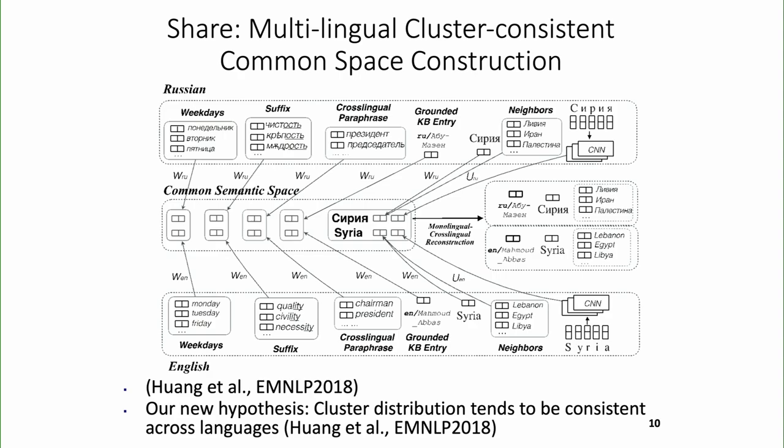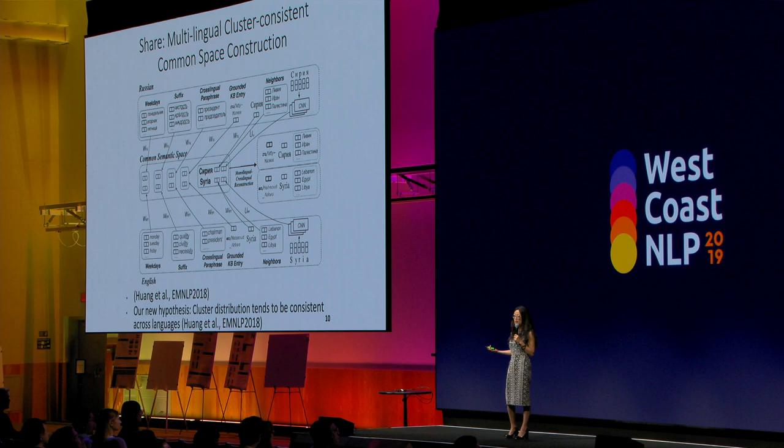The key issue is how to construct clusters. We designed six different ways. One method is to leverage language-universal databases — linguists have spent decades constructing these, like WALS and CCLS, which provide word classes such as weekdays in Russian or equivalent suffixes to convert 'qualified' to 'quality.' We assume that if two words in two languages belong to the same class or share similar syntactic or morphological features, they should belong to one cluster. We also use neighbors in monolingual space — if a word's neighbors are all country names in both Russian and English, you can align those clusters.